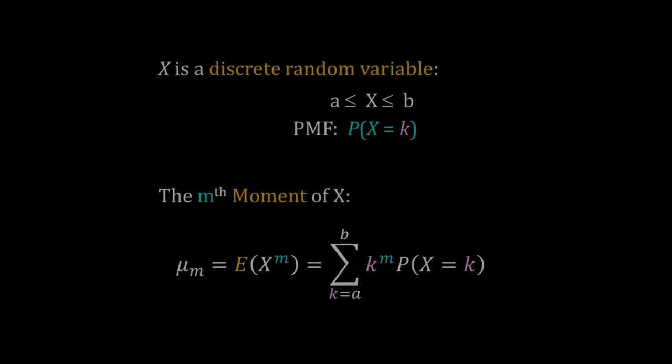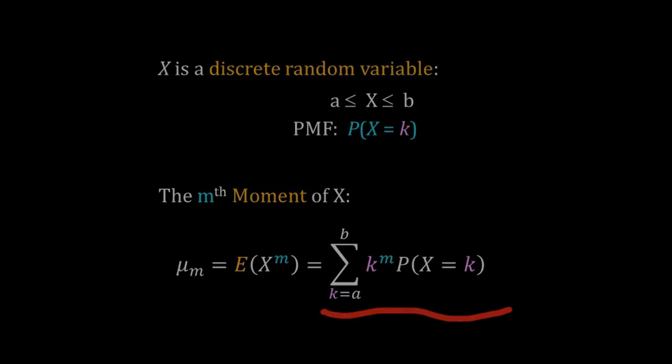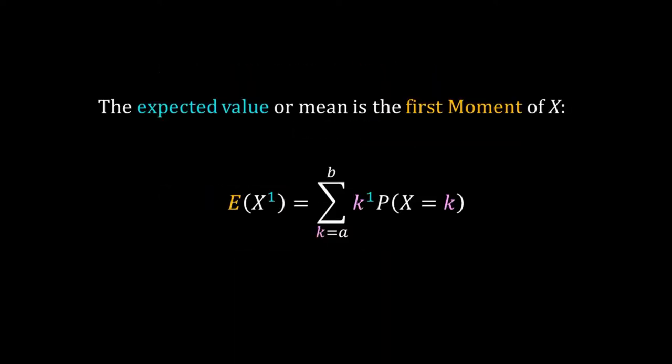Following these expected values, we define the moment of a random variable. The mth moment of a discrete random variable between a and b is defined as the sum of k^m times P(k) over all possible values of k, where k is a particular value or realization of x. So the arithmetic mean or average is the first moment of a random variable, where m = 1.